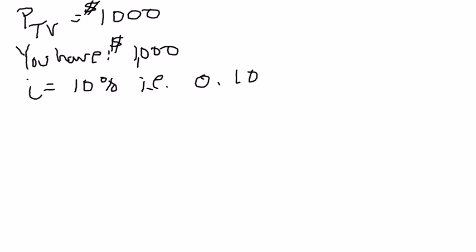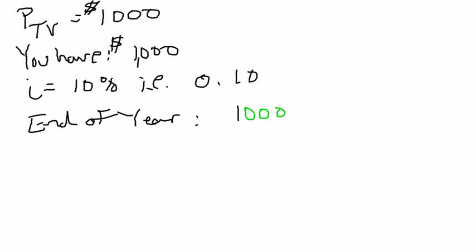If that's the case and you deposit a thousand dollars in your savings account, then at the end of the year you would get your one thousand dollars back plus ten percent, or one hundred dollars, giving you a total of eleven hundred dollars. So at the end of the year you would have eleven hundred dollars. Your reward for savings in terms of dollars is one hundred dollars.